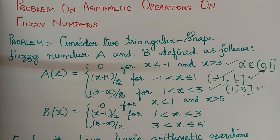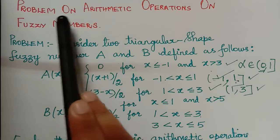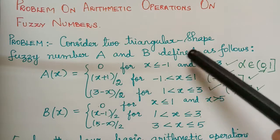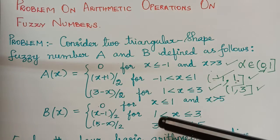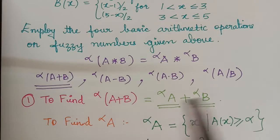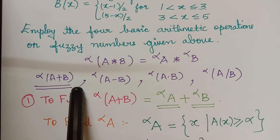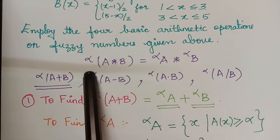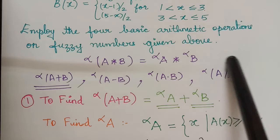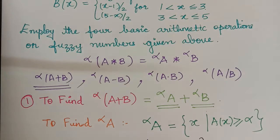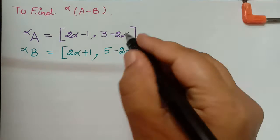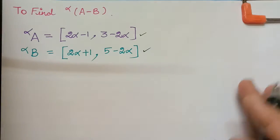Hello students. This is a continuation of our previous lecture on problems on arithmetic operations on fuzzy numbers. We were dealing with this problem where we had a(x) and b(x) and we had to find all four operations. We have already found the alpha cut of a plus b in our previous video.